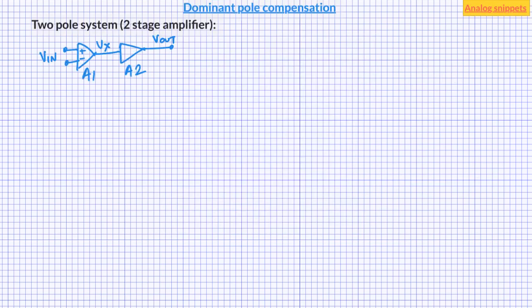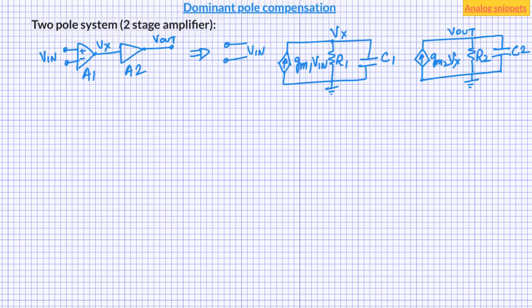Let's say we have a two-pole system, for example a two-stage amplifier. The gain of this amplifier can be modeled using voltage-controlled current sources and associated poles, and the bandwidth can be modeled using node capacitors and resistors. The gain and bandwidth of these individual stages are given by these equations.